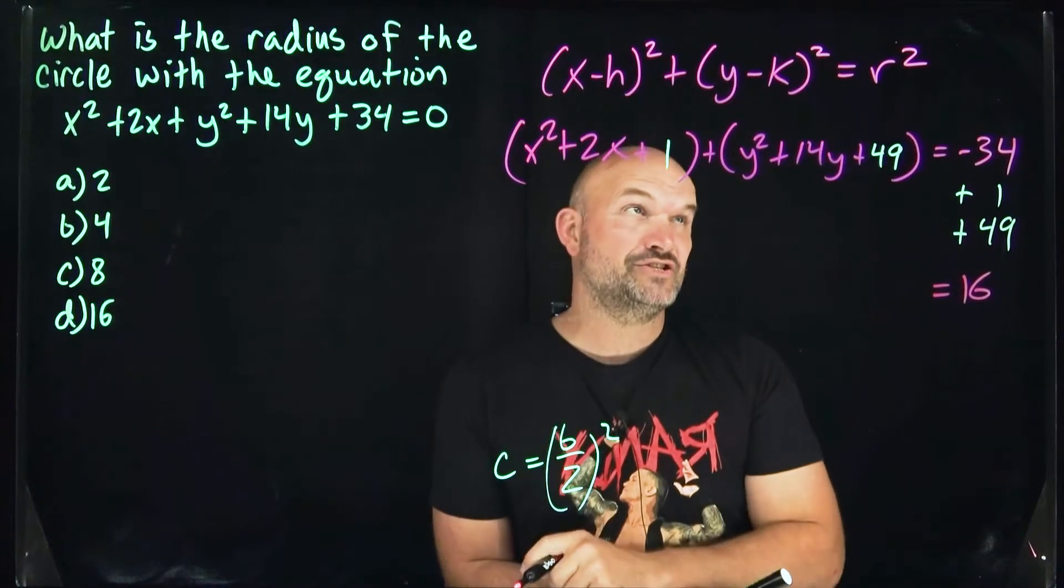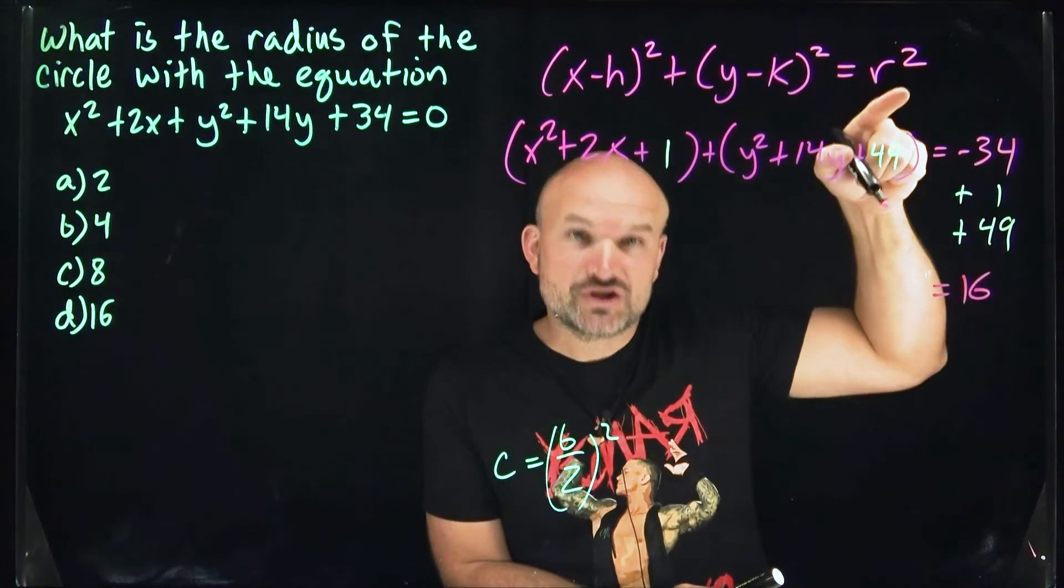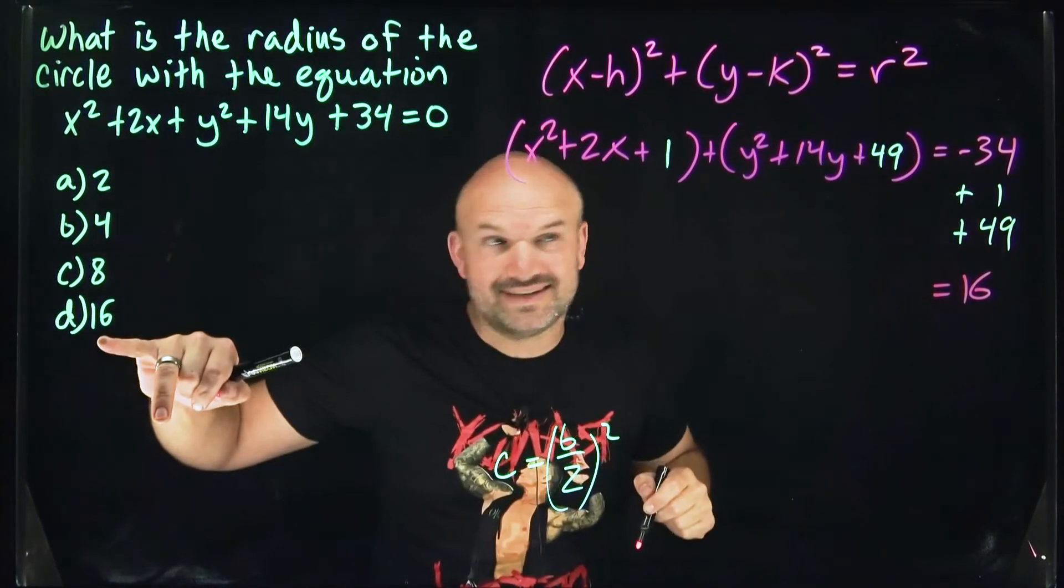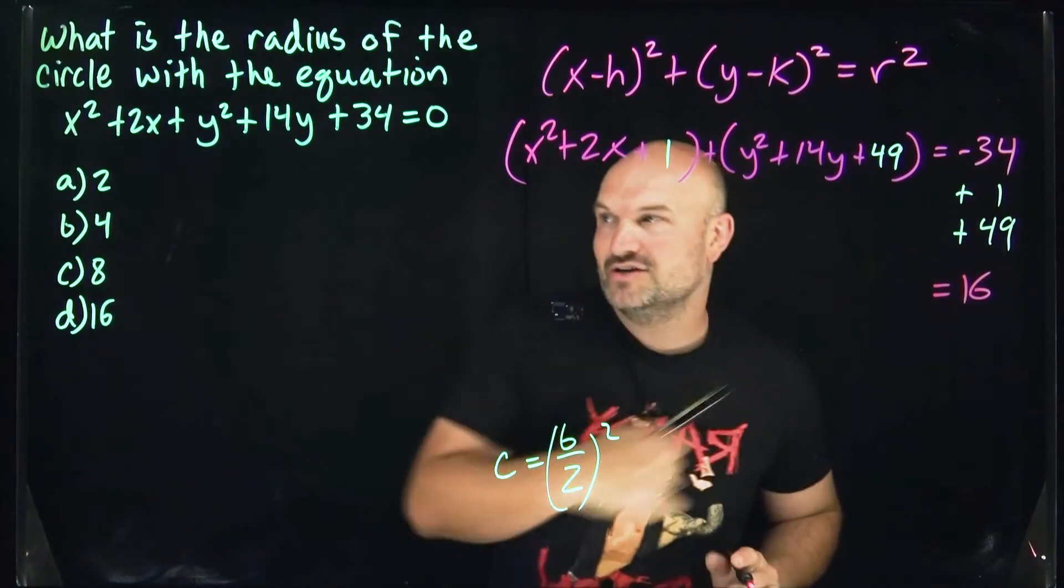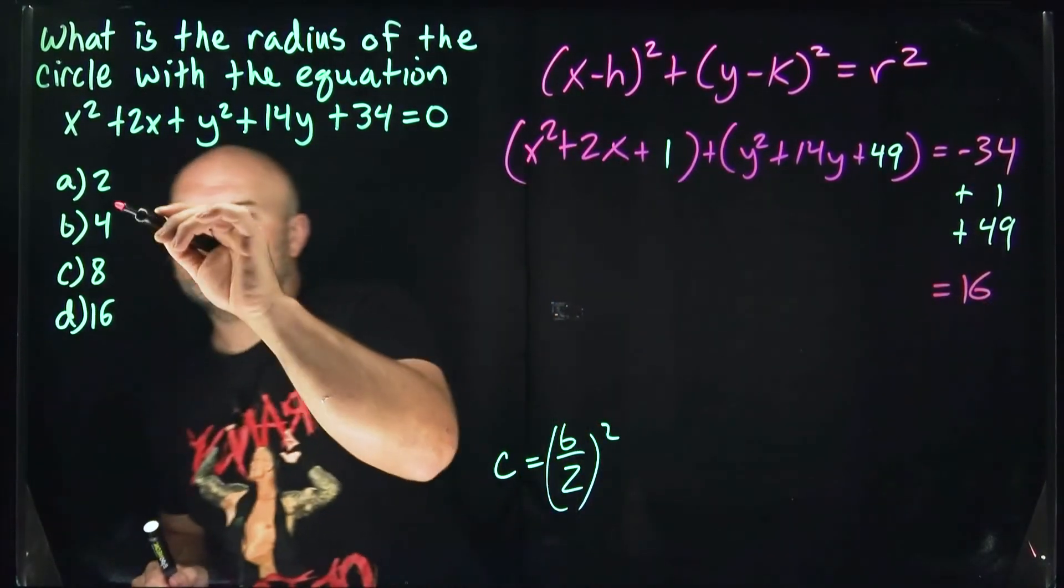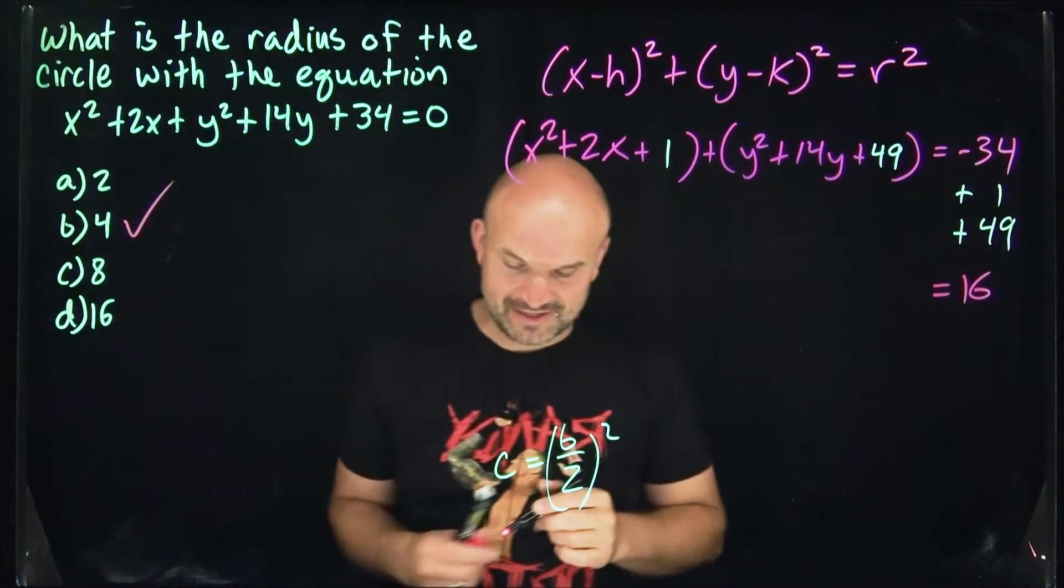Remember, 16 is r². We're not looking for 16; we're looking for r. So the square root of 16 is 4. That's your answer.